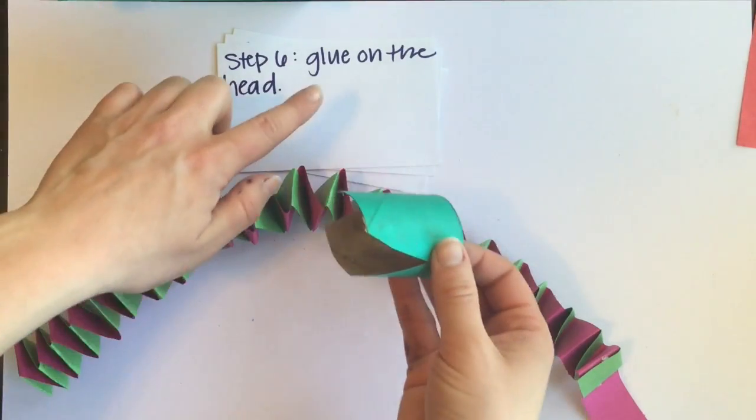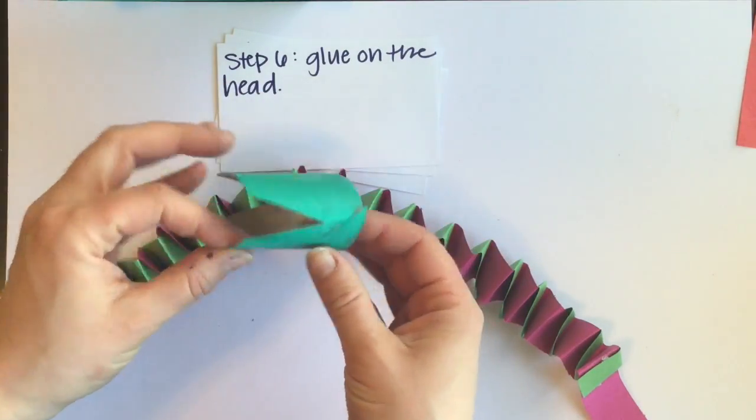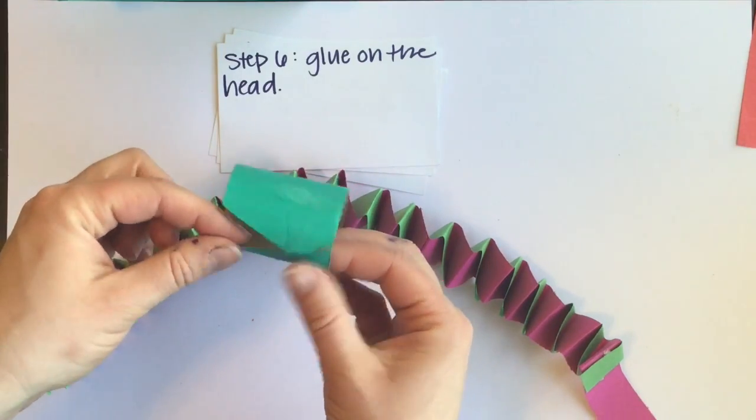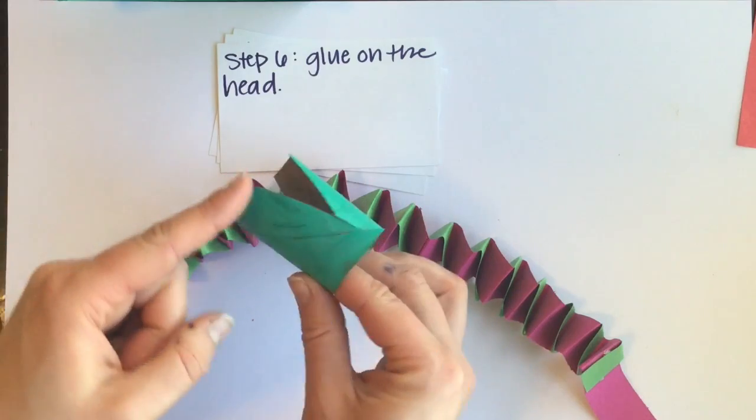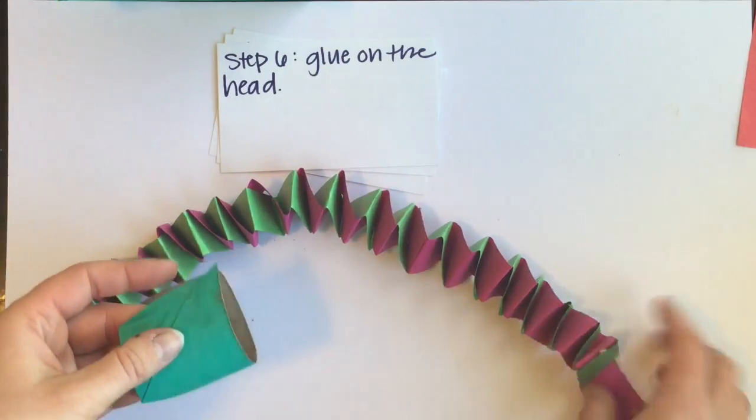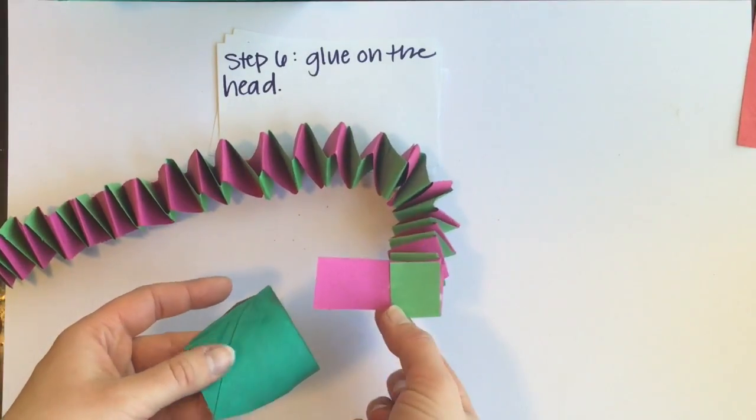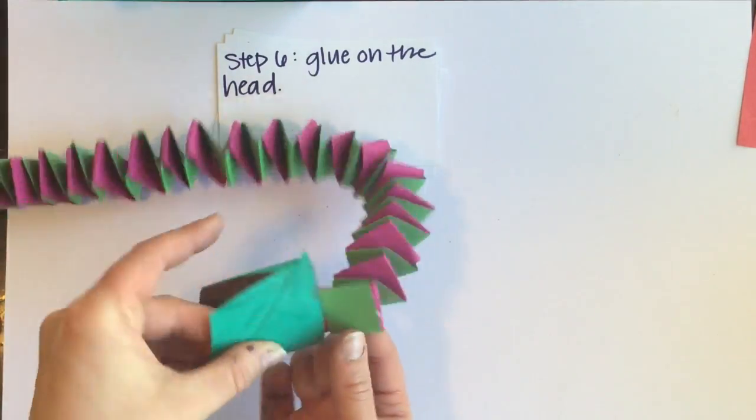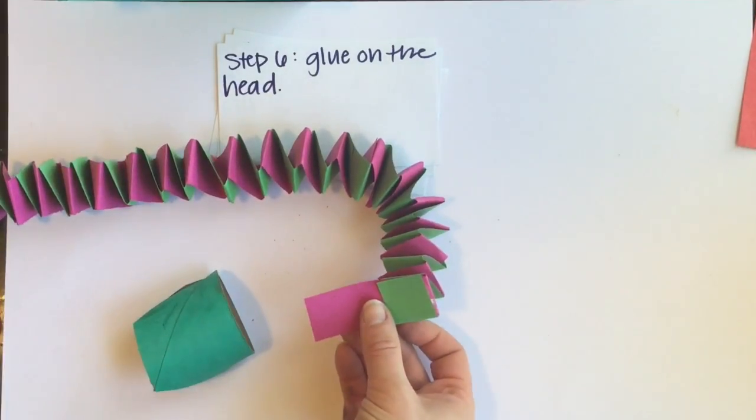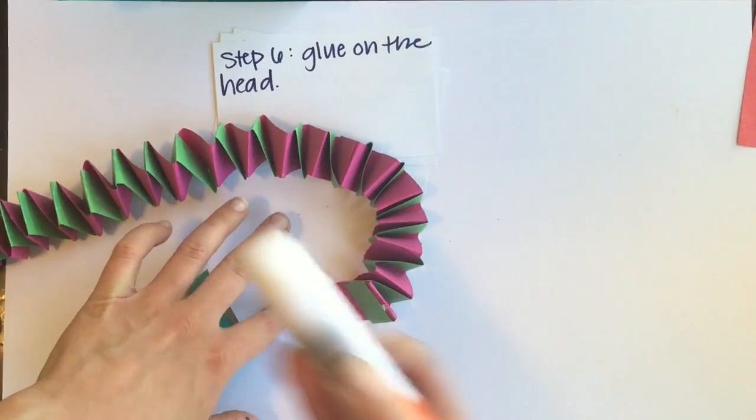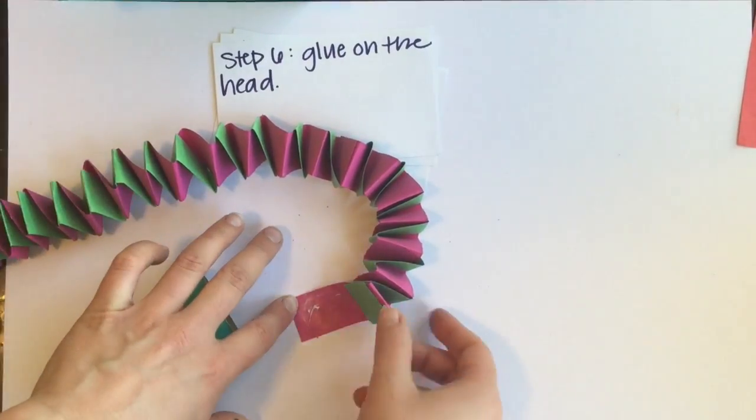Step six, you're going to glue on the head. So I've made a head by cutting out a paper towel roll and painting it. Cut triangles out to make a mouth. And remember I have this extra flap here for adding glue to glue the head onto the body. So I'm going to take my glue and put my glue on that flap.